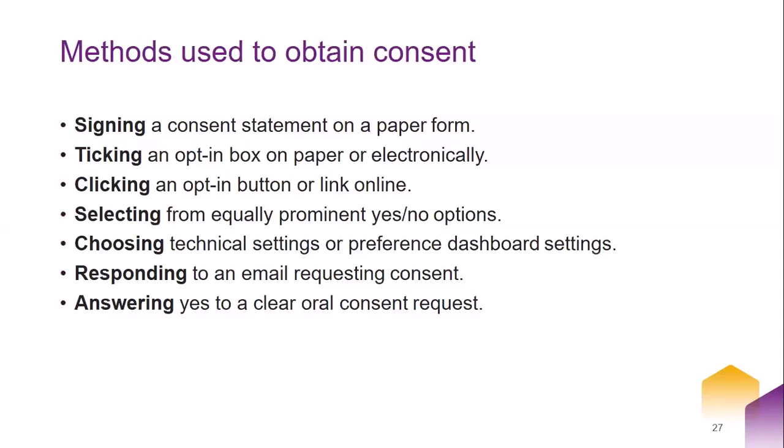Different methods can be used to obtain consent. The ICO has recommended: signing a consent statement on a paper form, ticking an opt-in box on paper or electronically, clicking an opt-in button or link online, selecting from equally prominent yes/no options, choosing technical settings or preference dashboard settings, responding to an email requesting consent, or answering yes to a clear oral consent request. All these methods fulfill the conditions for consent, emphasizing a clear affirmative action and ensuring consent cannot be inferred from silence, pre-ticked boxes, or inactivity.